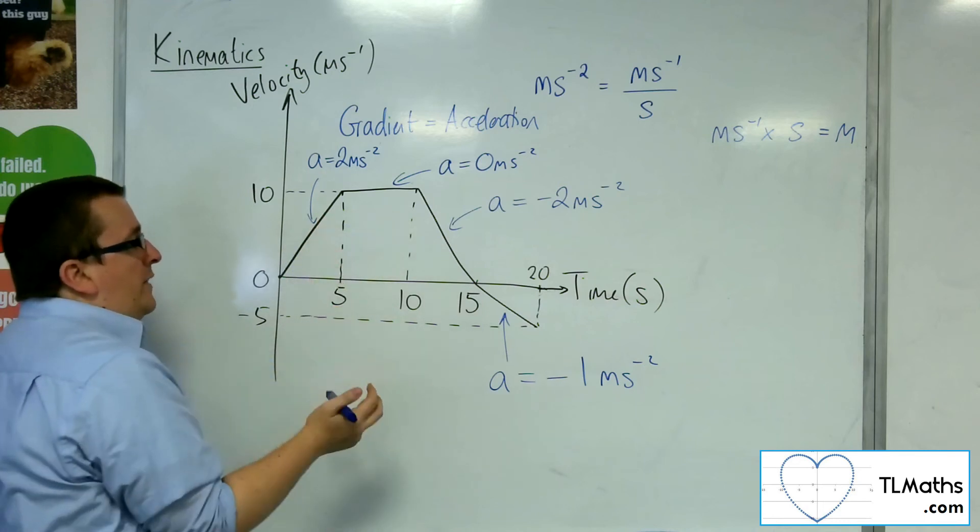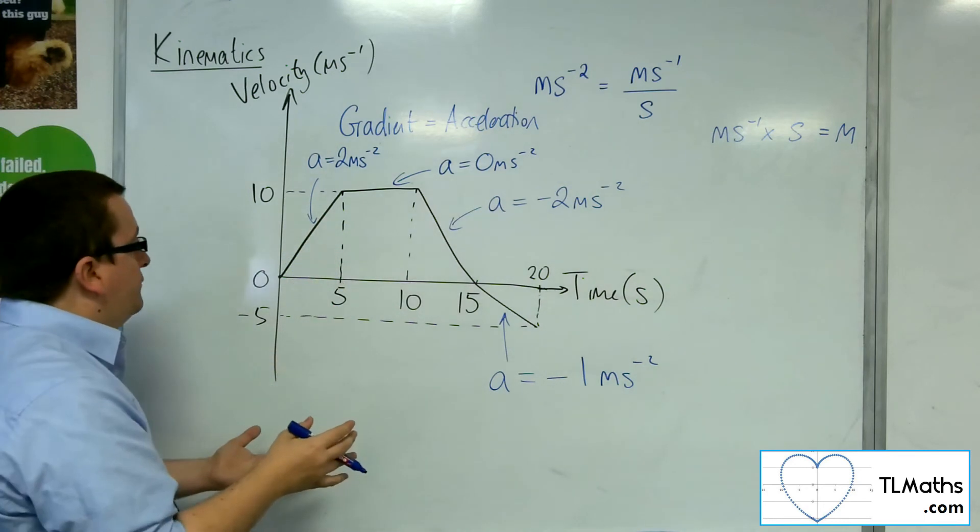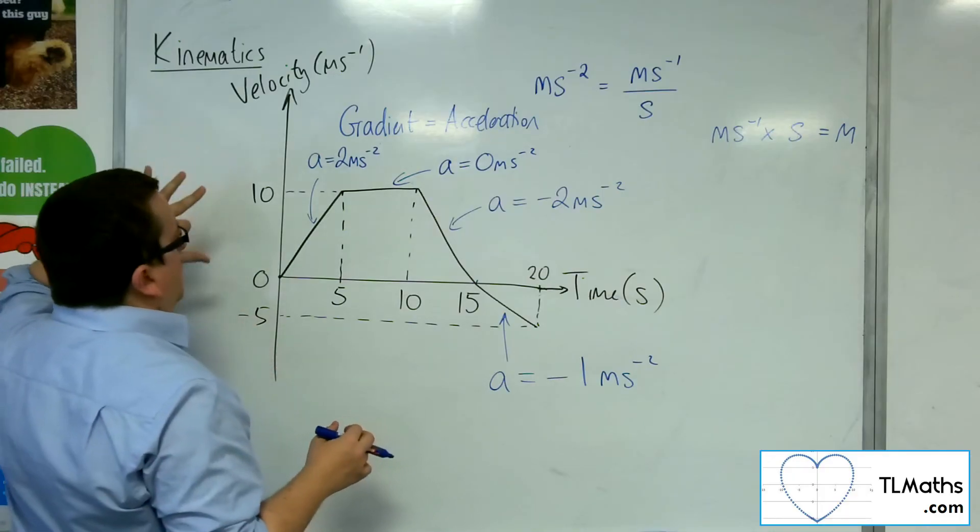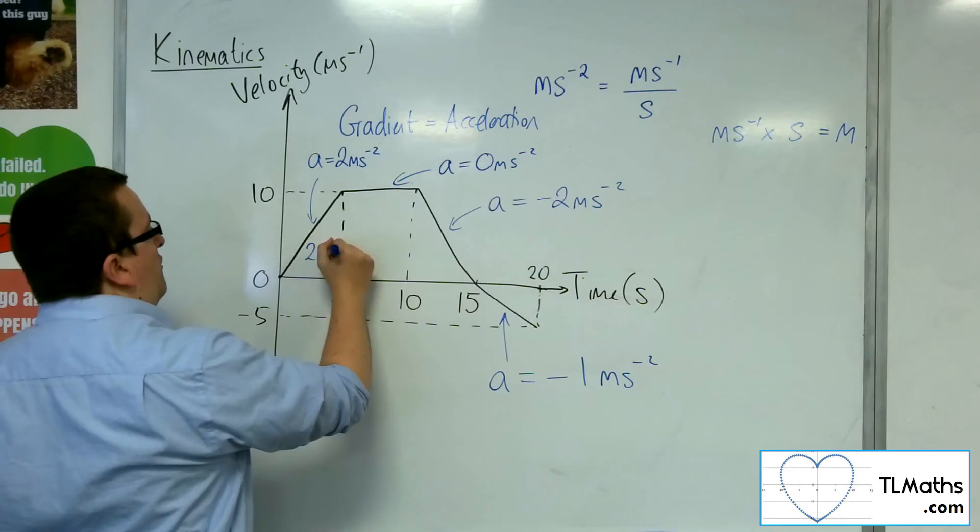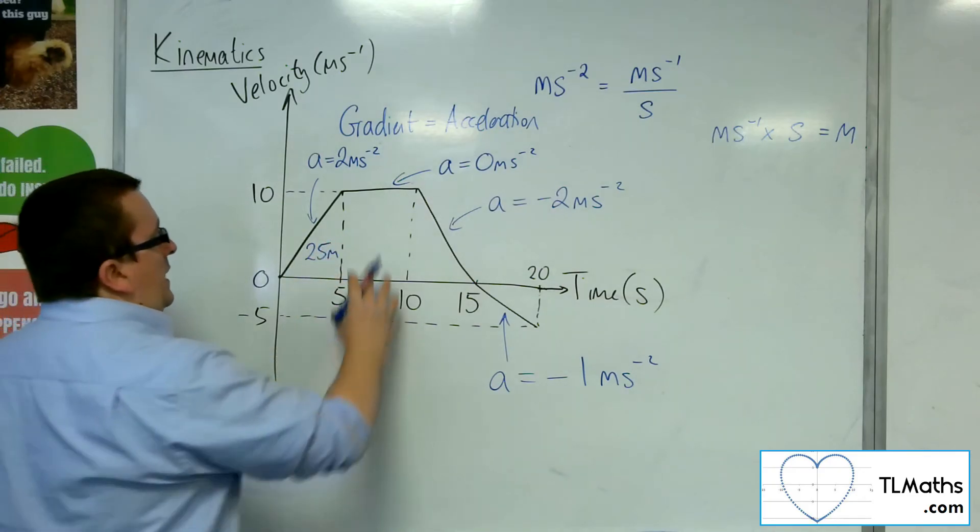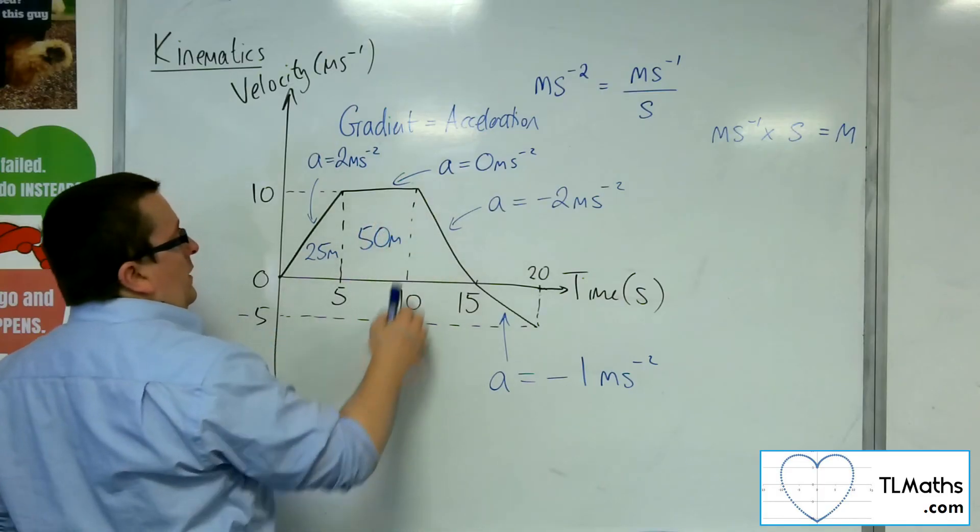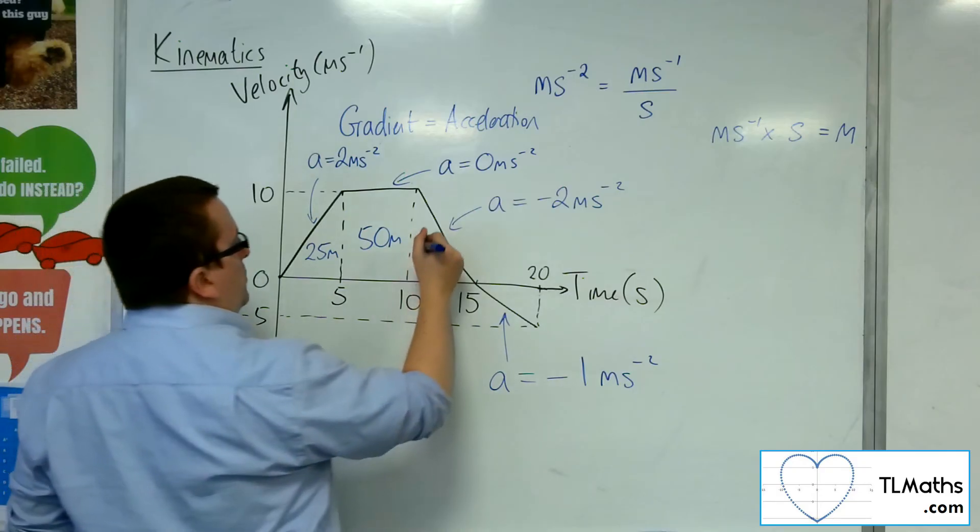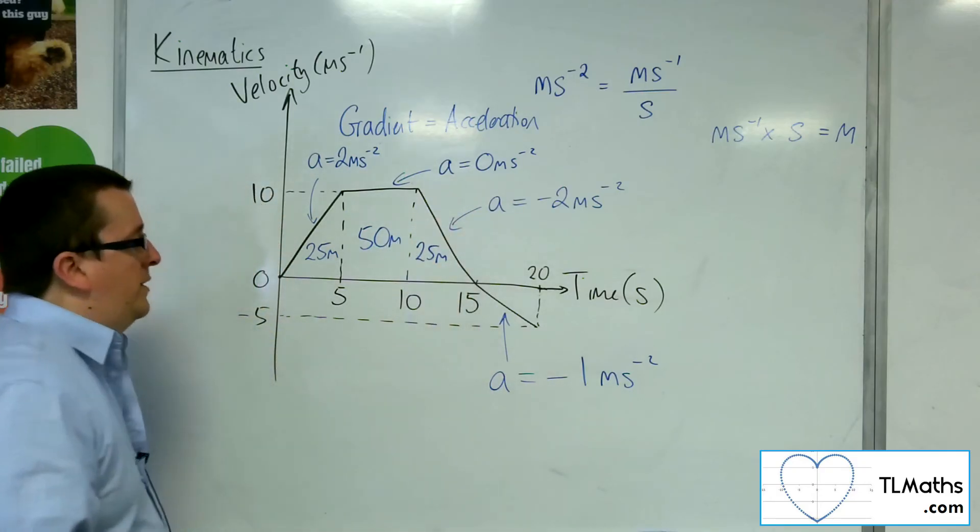So the displacement of the particle in the first five seconds is actually the area of that triangle. So I can do half base times height. So half five times ten is 25. So it's 25 metres that it has travelled in that first five seconds. In the second five seconds, I've got five by ten, so 50 metres. In the next five seconds, this is 25 metres again, because I've got half base times height, which gives me the 25.